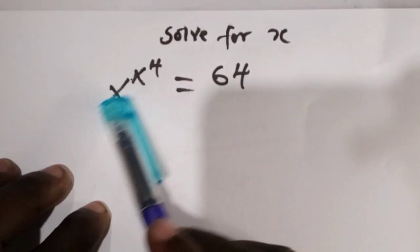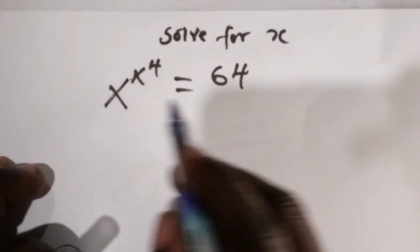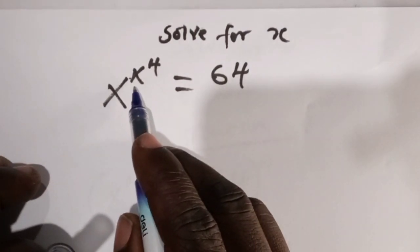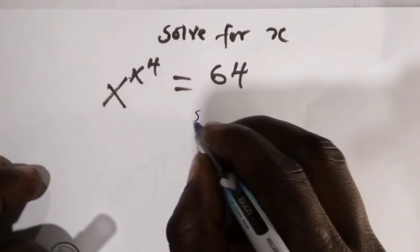Welcome back. Today we are looking at this exponential equation and we are told to solve for x. We have x to the power x to the power 4 which equals 64. So let's get started with the solution.